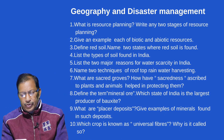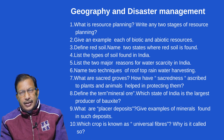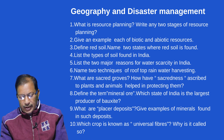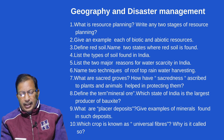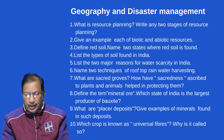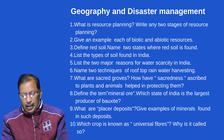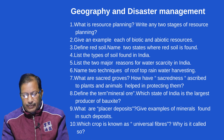What is resource planning? Write any two stages of resource planning and give an example each of biotic and abiotic resources. Define red soil and name two states where red soil is found. List the types of soil found in India. List two major reasons for water scarcity in India. Name two techniques of rooftop rainwater harvesting. How have sacredness ascribed to plants and animals helped in protecting them?